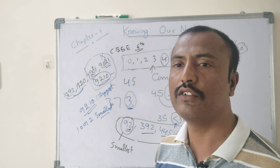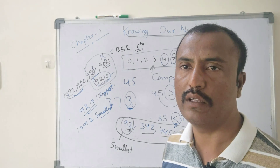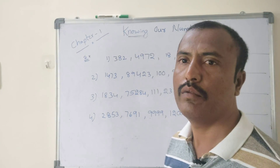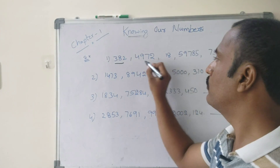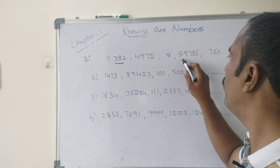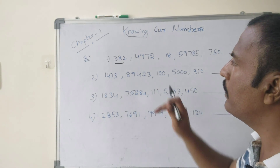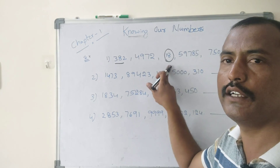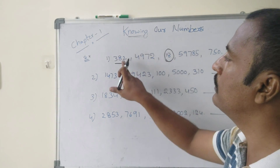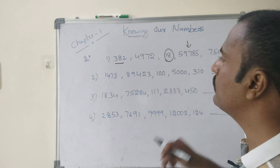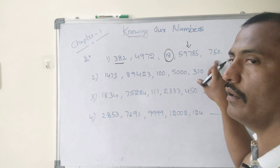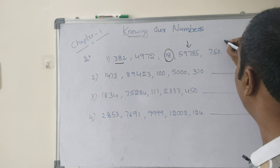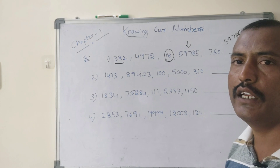We can compare numbers this way. Next example: 382, 4972, 80, 59785, 750 — comparing in this series. 18 is the smallest because it has only two digits. This is the biggest because it has five digits — 59785 is the greatest number.